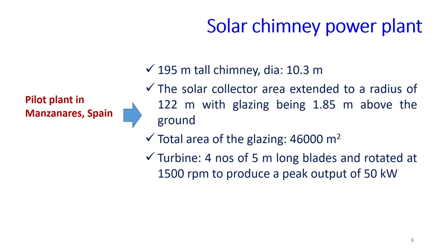An example of where this kind of plant is located is the Manzanares plant in Spain. Its specifications include: chimney height of 195 m, chimney diameter of 10.3 m, solar collector extending to a radius of 122 m with glazing 1.85 m above the ground, and a total glazing area of 46,000 m². Four turbines with 5-meter-long blades rotating at 1500 rpm produced a peak power output of 50 kilowatt.